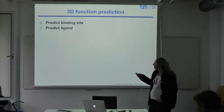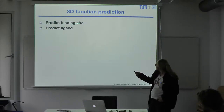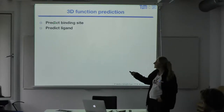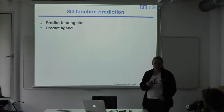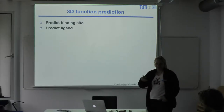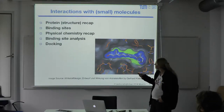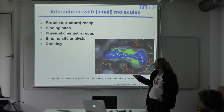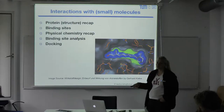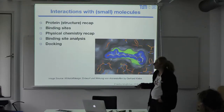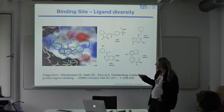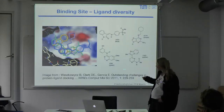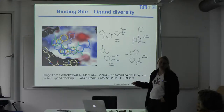For 3D function prediction, you can predict the binding site and try to predict the ligand. Predicting the binding site is through analysis and finding the binding site. Predicting the ligand would be through docking a whole set of compounds against the protein, finding which one binds well, and hopefully finding a function. This lecture will cover binding sites — how to analyze and find them — and in the second part, docking algorithms.